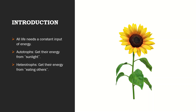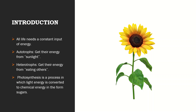Here we will learn how plants make their own food. It is with the help of a process known as photosynthesis, in which light energy is converted to chemical energy in the form of sugars.